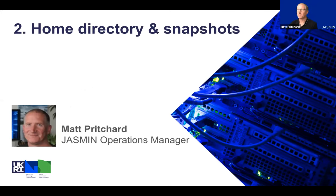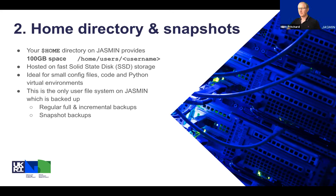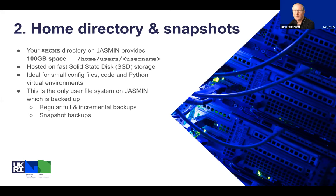Your home directory on Jasmine provides 100 gigabytes of space on fast solid-state disk storage, ideal for files, code, and Python virtual environments. Importantly, it is the only user file system on Jasmine that is backed up — regular full and incremental backups are done for you. There are also snapshot backups, a little-known feature you might find useful. To check how much space you're using, use the 'pdu' command with -s for summary and -h for human readable output.